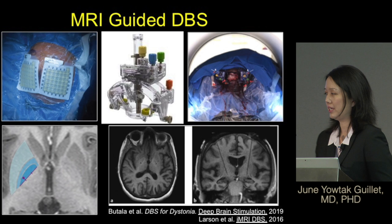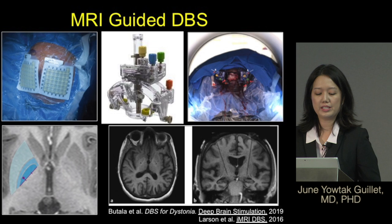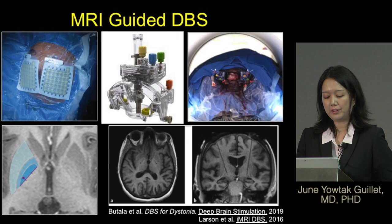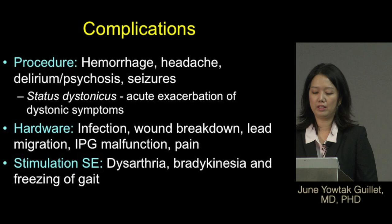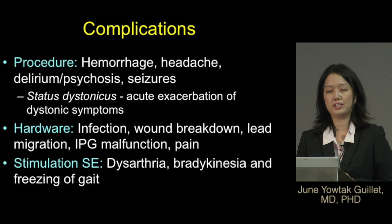The hardware components of a DBS system include the stimulation probe, the fixation cap, the extension lead, and the implantable pulse generator, or IPG. In the US there are three different companies that sell DBS electrodes and equipment.